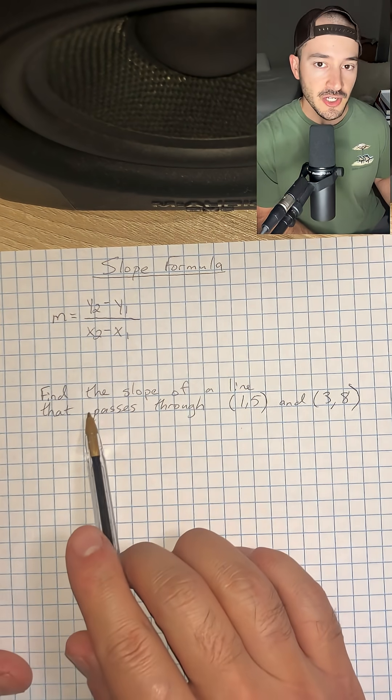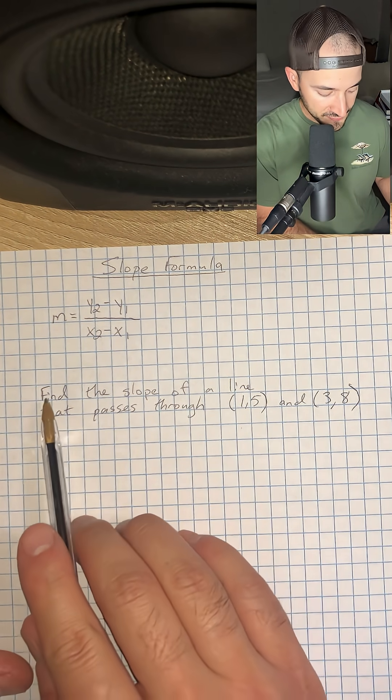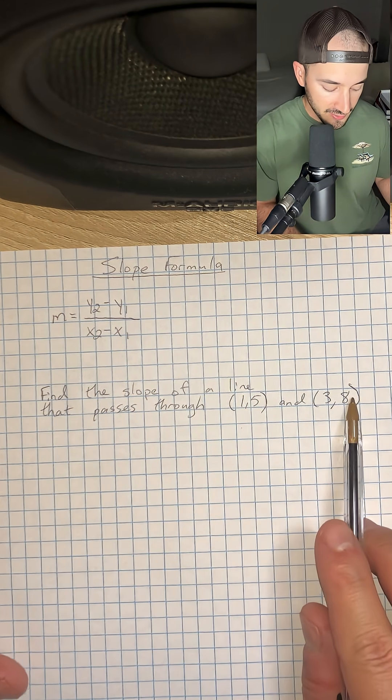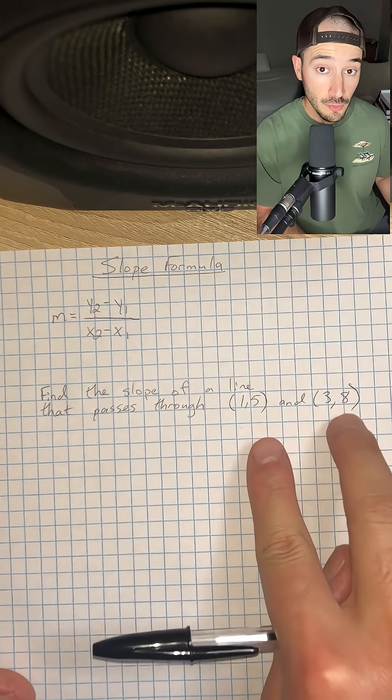So let's do an example to show you how to do this. It says find the slope of a line that passes through (1,5) and (3,8). Okay, so they give us two ordered pairs.